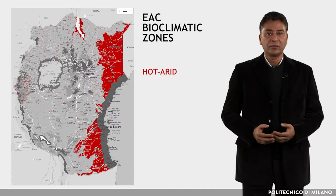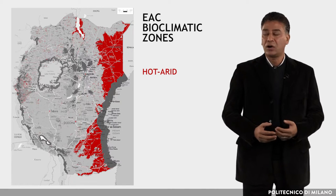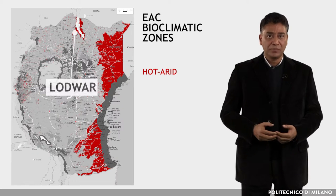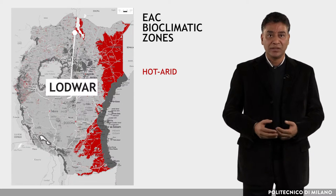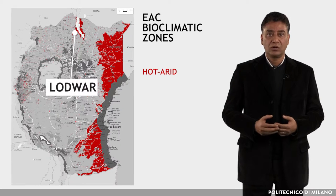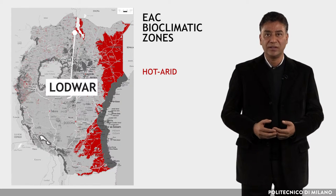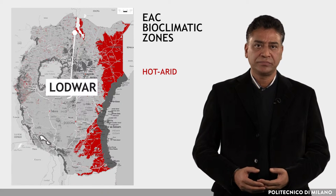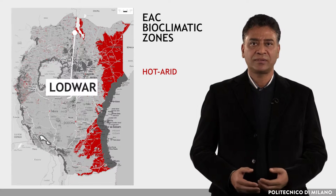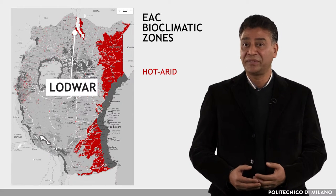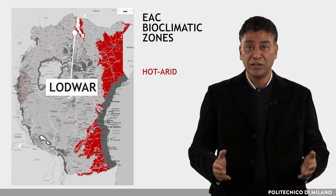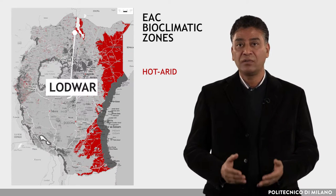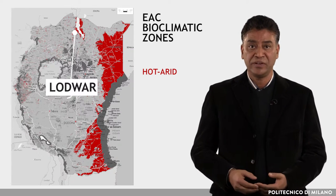The second zone is Hot Arid. The representative location is Lodwar in Kenya. This zone includes parts far from the sea with altitude ranging from 0 to 500 meters.